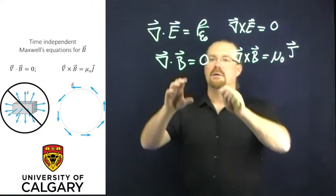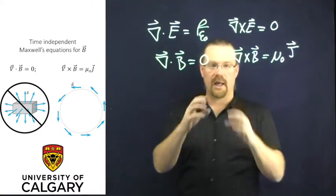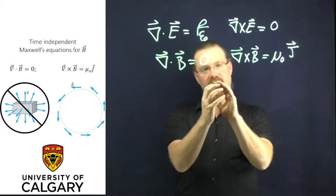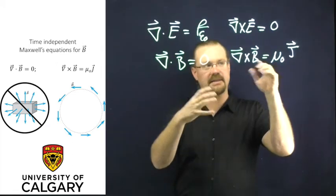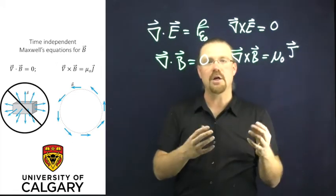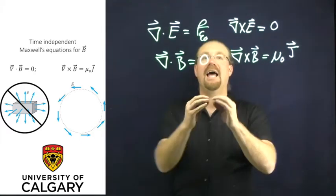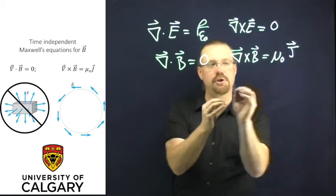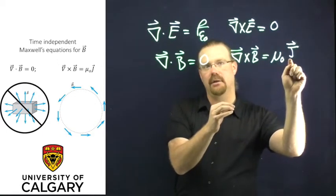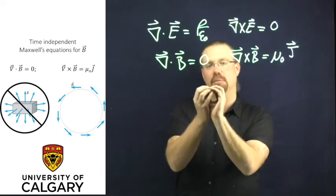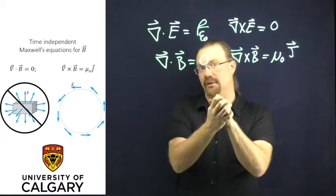So nothing ever has a magnetic field coming out of it. Magnetic fields are always going around. So these solenoidal fields for our magnets have a circulation, and the driver for that circulation is the current density. But because there's no magnetic monopoles, there's no place for magnetic fields to come out or go in.